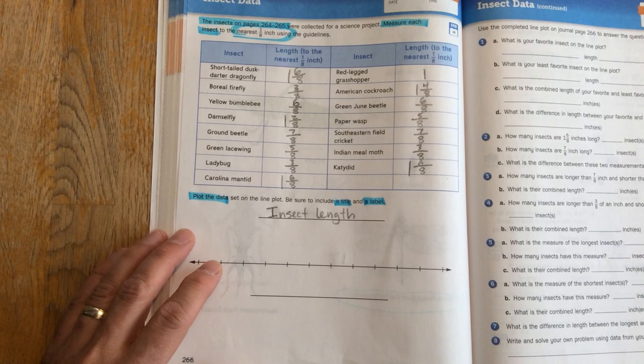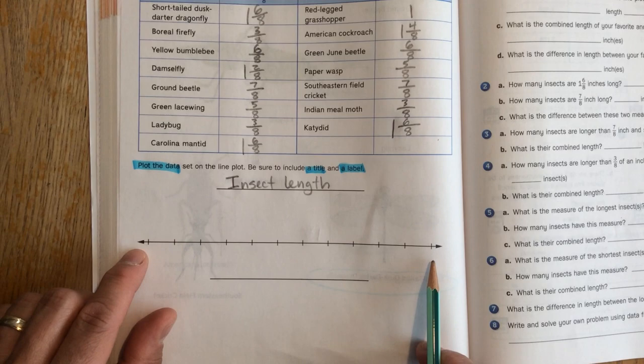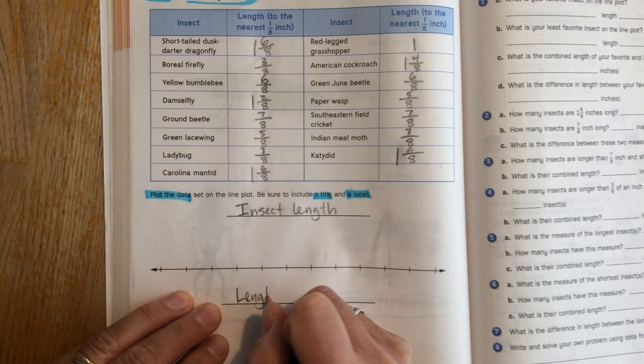And then down here at the bottom, where we label, we need to tell the onlooker what this table's information tells us. Okay, and it's telling us length in inches instead of, say, centimeters.